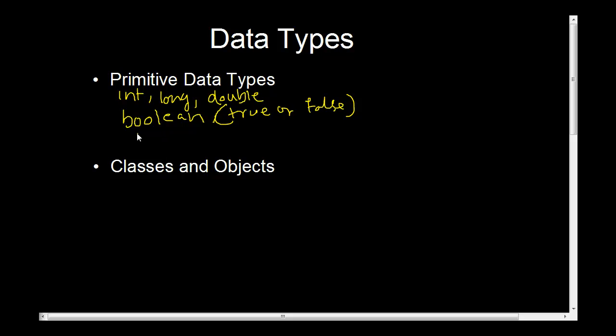The next primitive data type of importance is char. Char is just a character and the way you assign it is char alpha equals 'a'. So we have created a variable called alpha of type char. It can contain only one character and we have assigned it the value 'a' here. And that's how you go about creating chars.